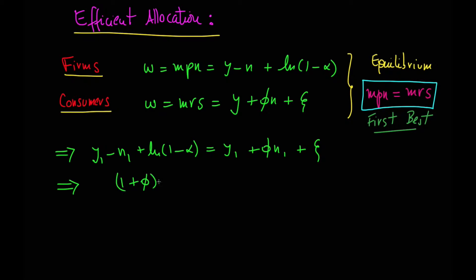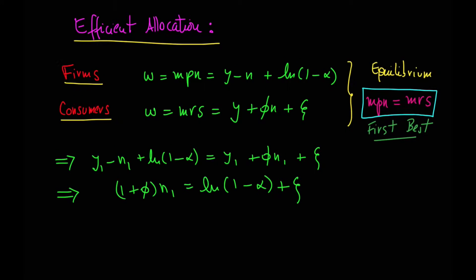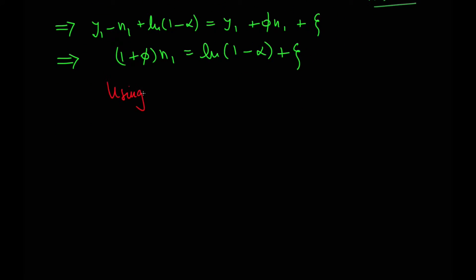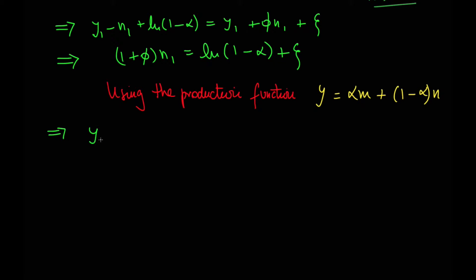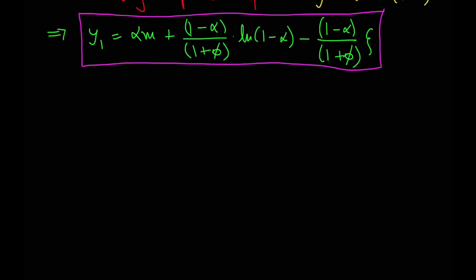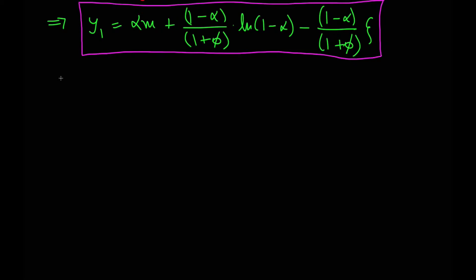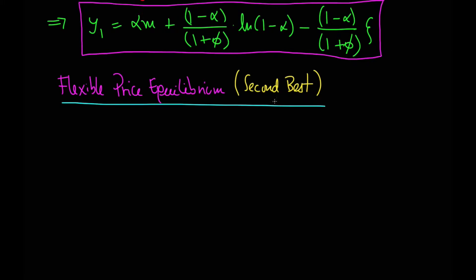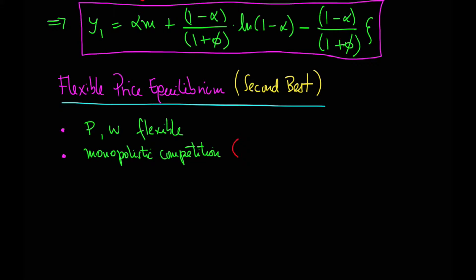We can develop this equilibrium using the production function, and we use the sub-index one to define this first optimal allocation. Under the flexible price equilibrium, that is the second best, we assume P and W — salaries and prices — are flexible, and we introduce monopolistic competition for firms.